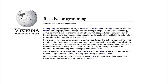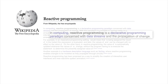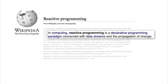Today we're looking at reactive programming patterns in Kotlin. So what's the big idea with reactive programming anyway? The Wikipedia definition tells us that in computing, reactive programming is a declarative programming paradigm concerned with data streams and the propagation of change.